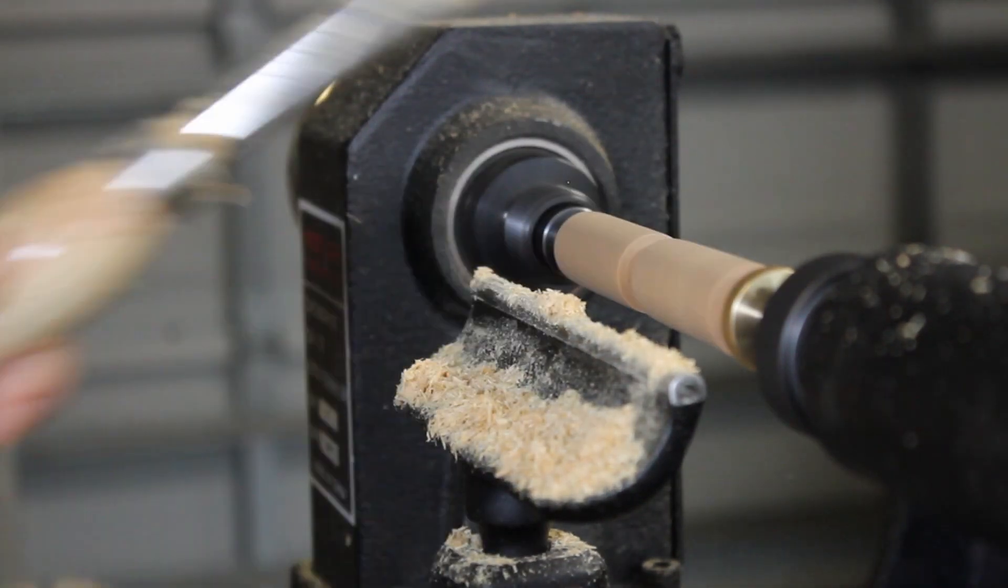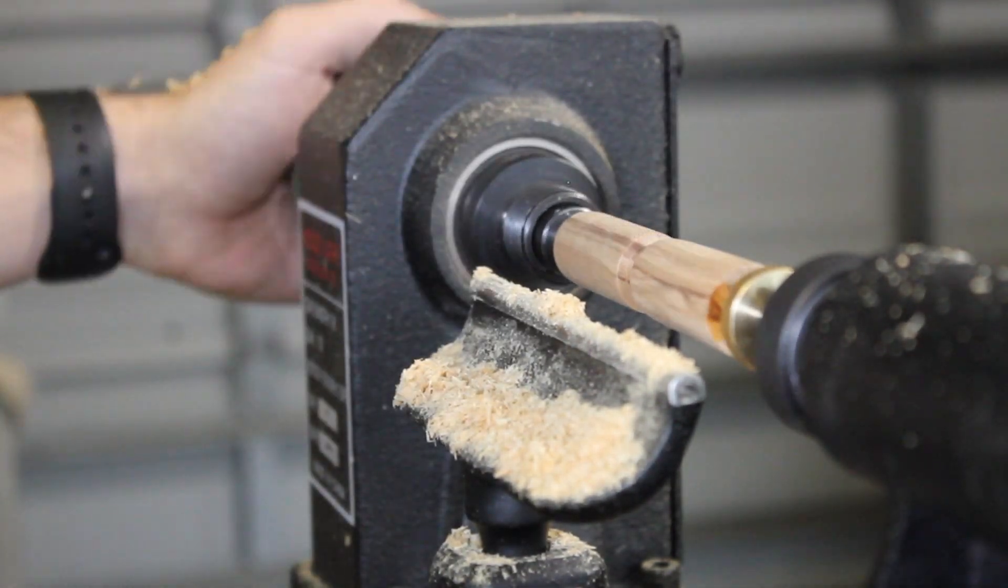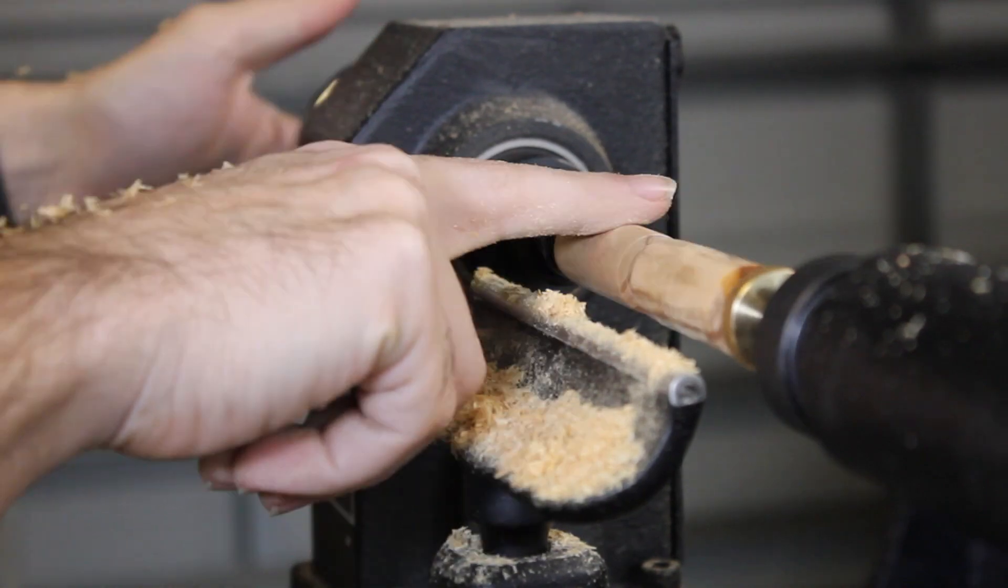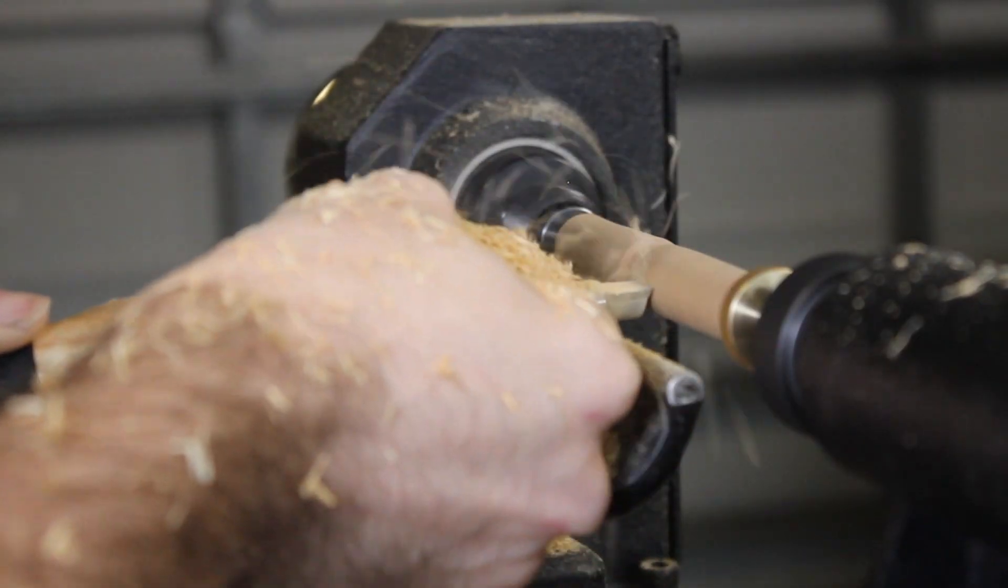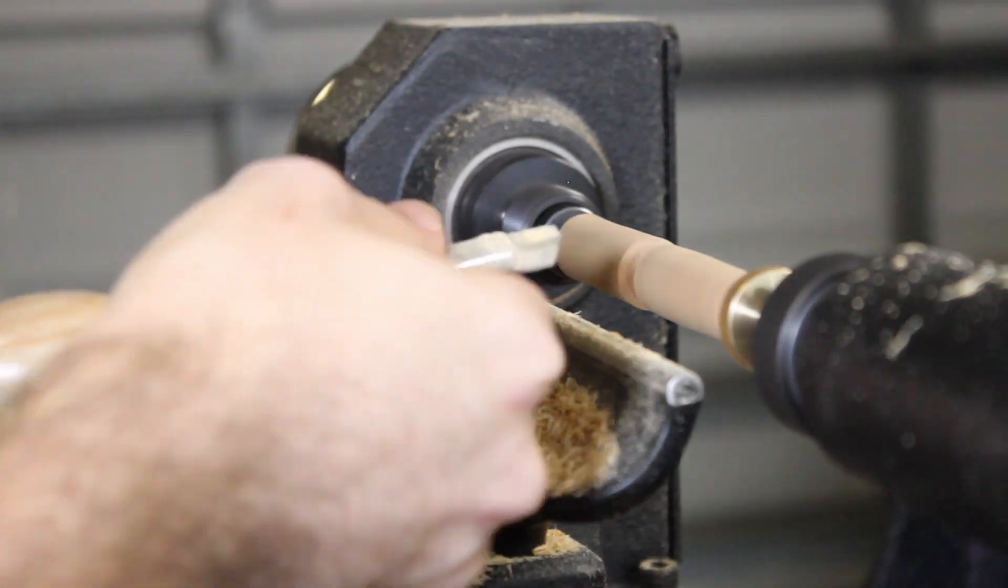Once it starts feeling like it's a little bit more cylinder shape, I use the tool on the top to see how smooth it is. Now I'm using my finger to get the same feeling. Now I'm able to go in and start working on the pen shape.